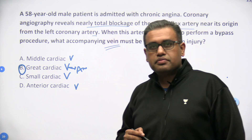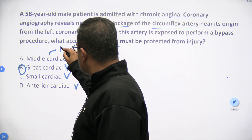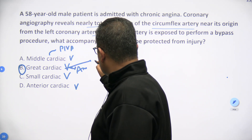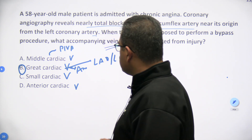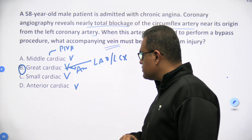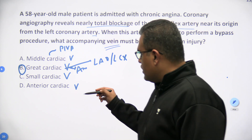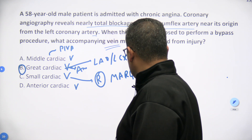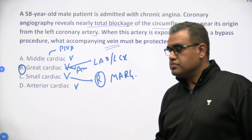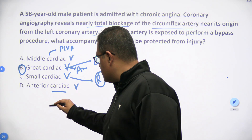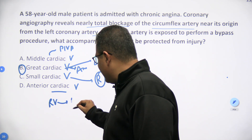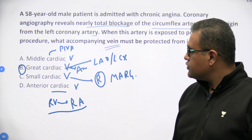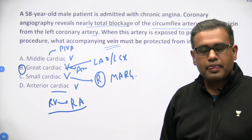Looking at the other options: the middle cardiac vein runs with the posterior interventricular artery. The great cardiac vein runs with the LAD and then obliquely with the LCX — the left circumflex. The small cardiac vein runs with the right marginal artery, which is actually a branch of the right coronary artery. The anterior cardiac vein is an independent vein that drains from the anterior wall of the right ventricle and goes directly into the right atrium — it does not drain into the coronary sinus. So the answer here is option B: great cardiac vein.